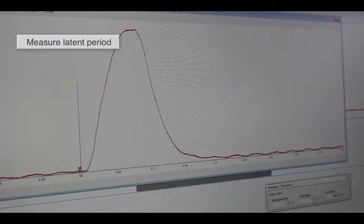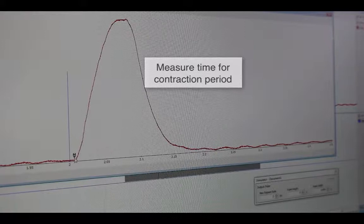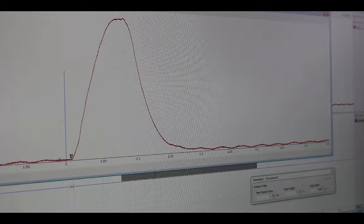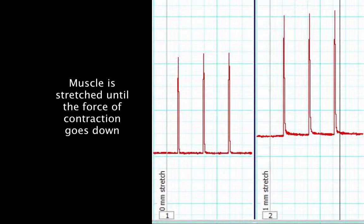To measure the latent period, the M marker is placed on the stimulus and the cursor at the beginning of contraction, and the change in time measured. To measure the time for contraction, the M marker is placed at the beginning of the contraction period, the cursor at the top, and the time between those two is recorded. To measure the relaxation phase, the M marker is placed at the top and the cursor at the bottom is recorded.